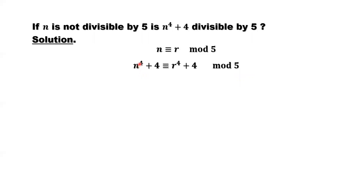N to the power of 4 plus 4, and r to the power of 4 plus 4, they have the same remainder if divided by 5. What is r? r is the remainder of N divided by 5.